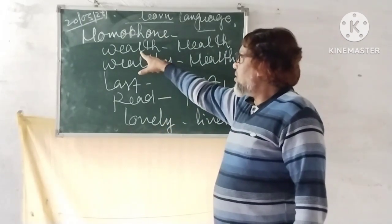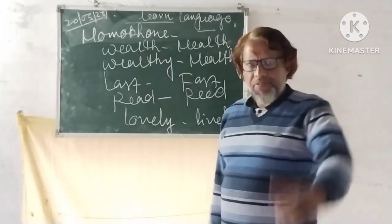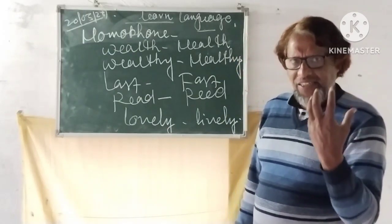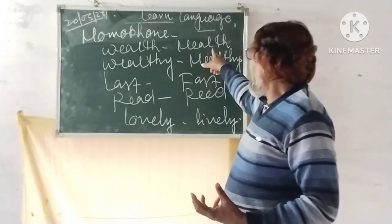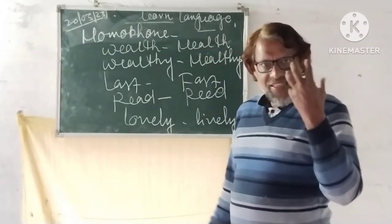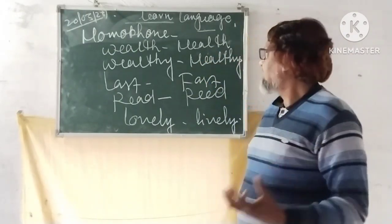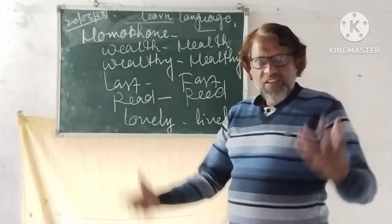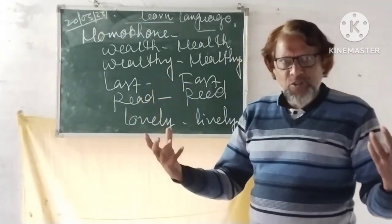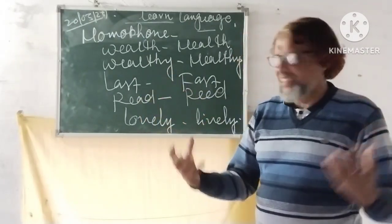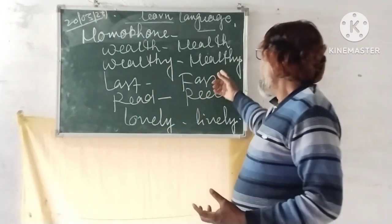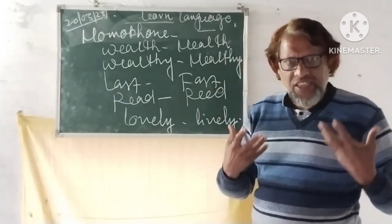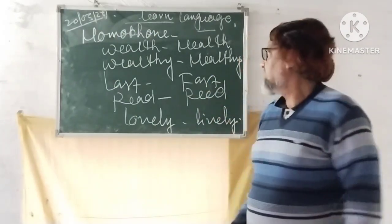Well — के माने होते हैं धन, दौलत. Health — सेहत. Wealthy — जिसके पास धन होता है, यानी धनी. Healthy — जिसके पास सेहत होती है, यानी सेहतमंद.